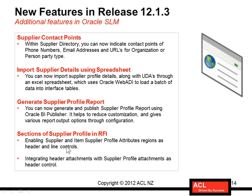Sections of Supplier Profile in RFI — enabling Supplier and Item Supplier Profile Attribute Regions as Header and Line Controls, and integrating Header Attachments with Supplier Profile Attachments as Header Controls. Basically, you can integrate Supplier Profile information in an RFI so that once the RFI is complete, the results that you have mapped with the Supplier Profile directly get imported into the Supplier Profile. The same holds for attachments — header level attachments of the RFI can be integrated with the Supplier Profile attachment at the header level.